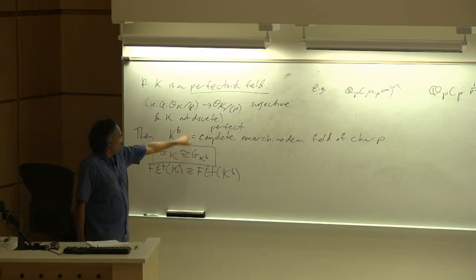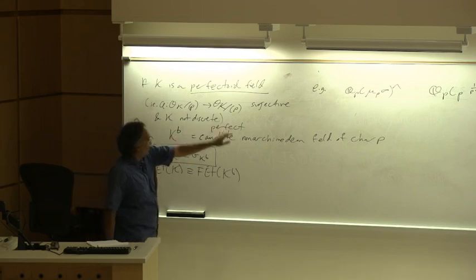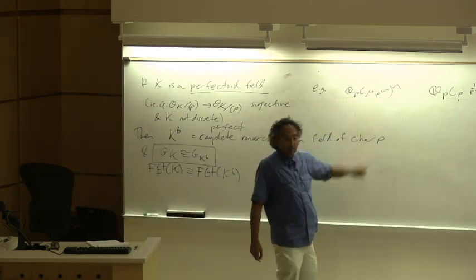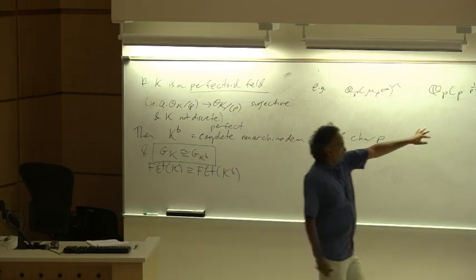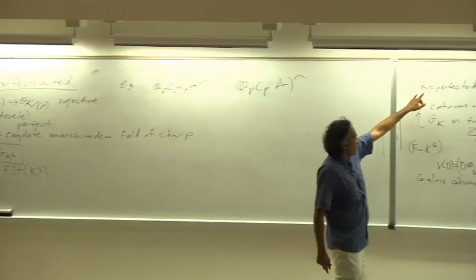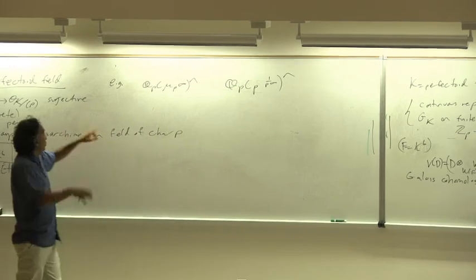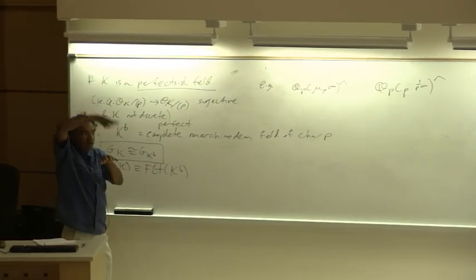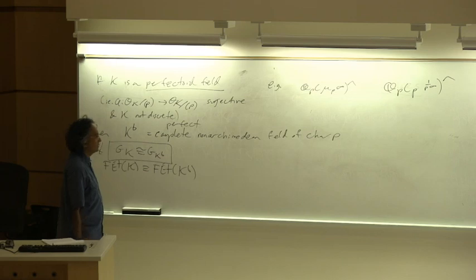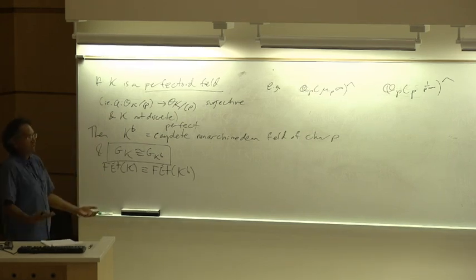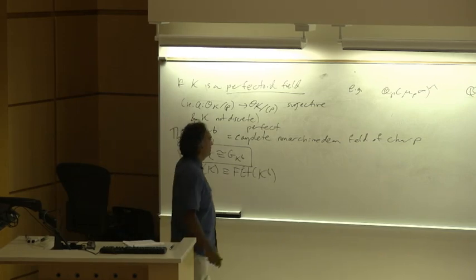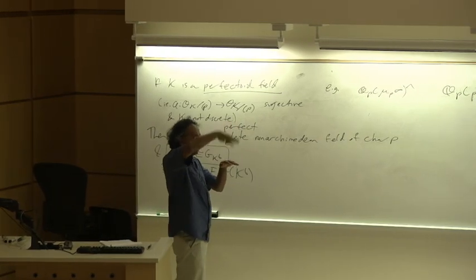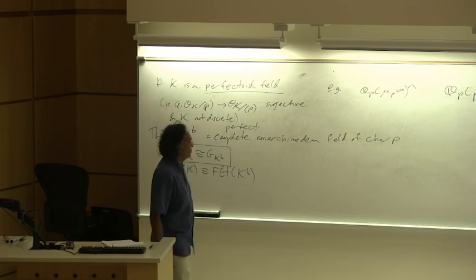Fontaine's original theory of phi-gamma modules didn't start with this level of generality, but he had this isomorphism for, say, this particular example. You can formally promote this to a statement about G_K when K is not perfectoid by using the fact that if you have a general K, you can find some algebraic extension whose completion is perfectoid. You want to make a relatively small extension which is perfectoid, and then apply this there.